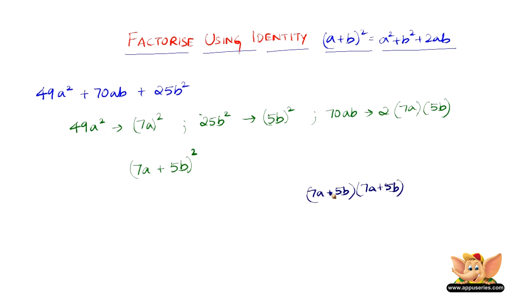We can either use the identity a plus b the whole square or we can multiply. I will show you multiplication. 7a into 7a is 49a square. 7a into 5b is 35ab. 5b into 7a is again 35ab. 5b into 5b is 25b square.